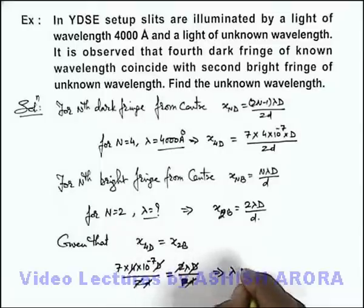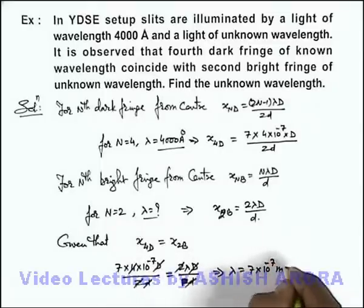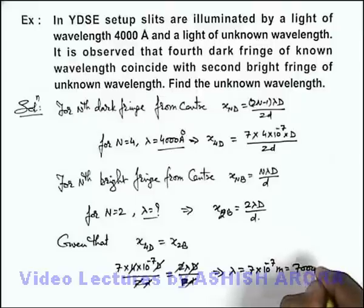This implies the value of lambda we are getting is 7×10^-7 meter, that is 7000 angstrom. That will be the answer to this problem.